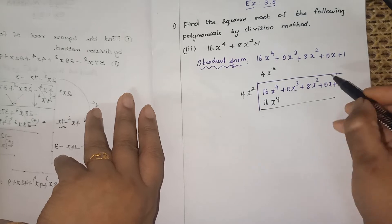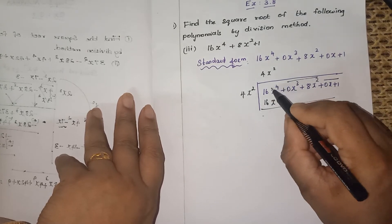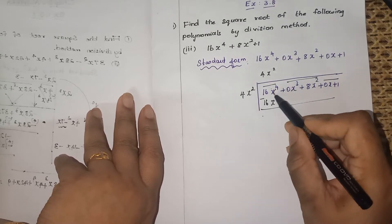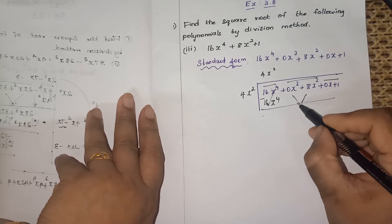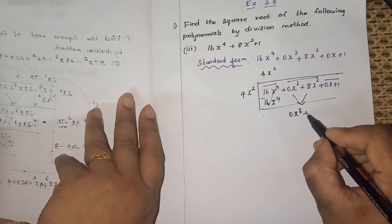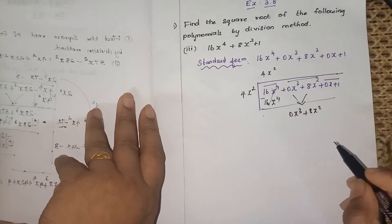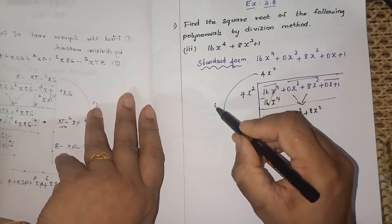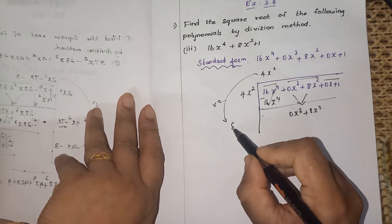Before that, you have to pair up this 2, this 2, and this 1. When you subtract it, this will get cancelled, so you can drop down these 2 terms: 0x cube plus 8x square. Now what will happen? You have to multiply this quotient into 2, so here you will get 8x square.